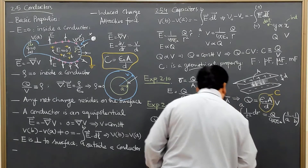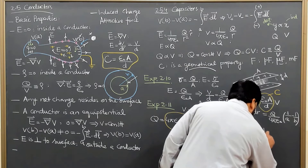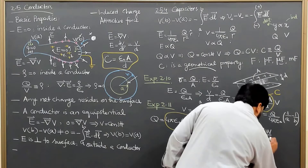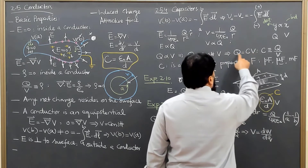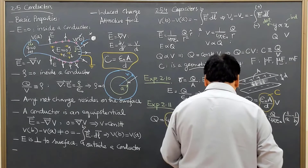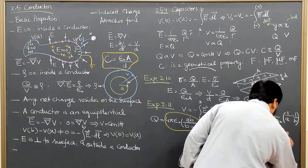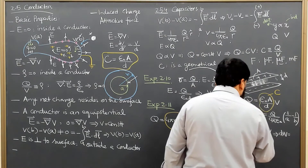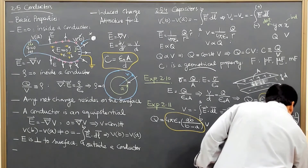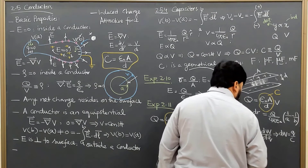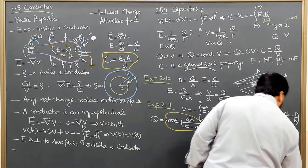Writing V = dW/dQ, and substituting V = q/C, we get dW = (q/C) dq, where I replace capital Q with small q for the integration variable.